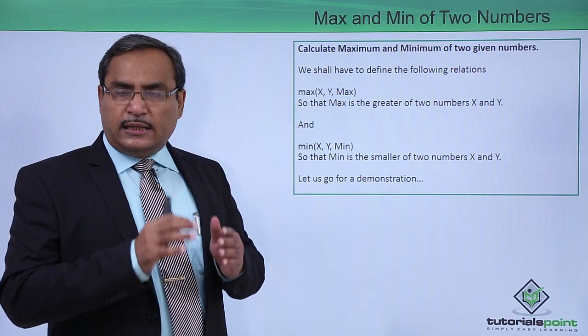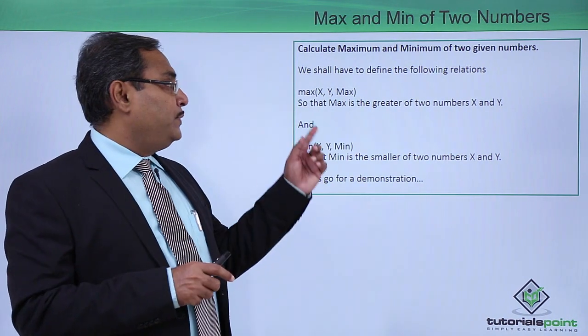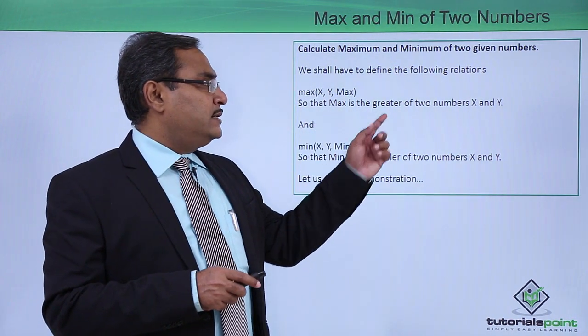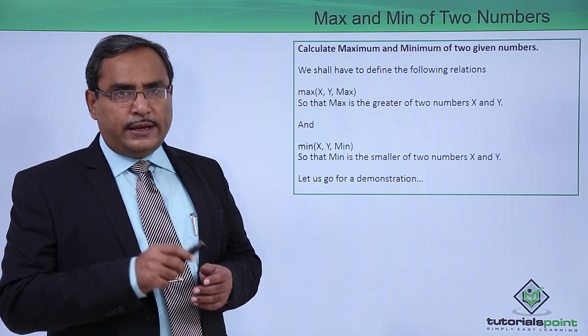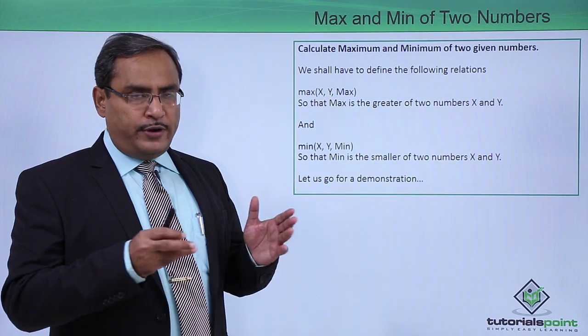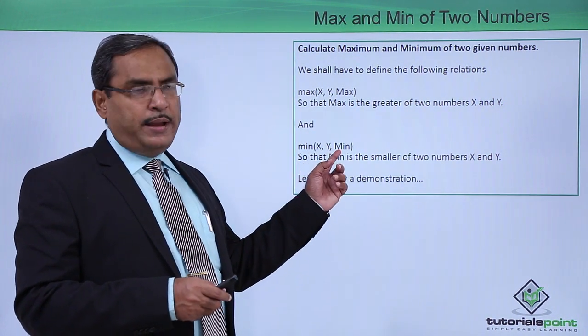That Max is the greater of the two numbers passed as X and Y. This predicate has to be written, has to be programmed and min(X, Y, Min). That Min is the smaller of two numbers X and Y.